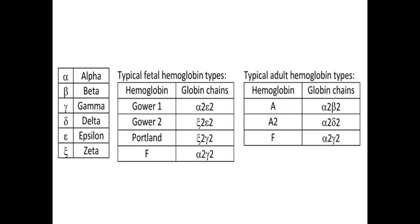Before we do the analogy of thalassemia, we should first go through what are the types of hemoglobin and what are the chains of hemoglobin. Normally the hemoglobin chains which are found are alpha, beta, gamma, delta, epsilon, and zeta.